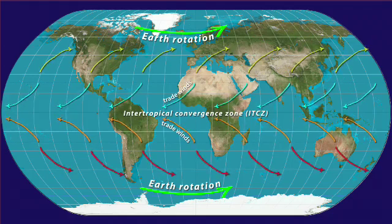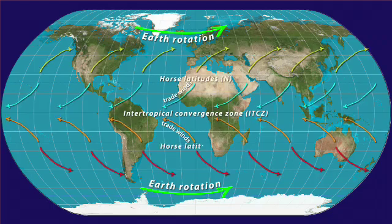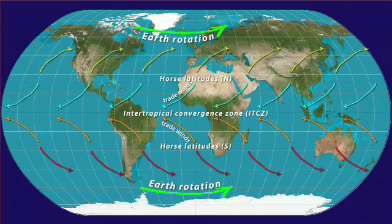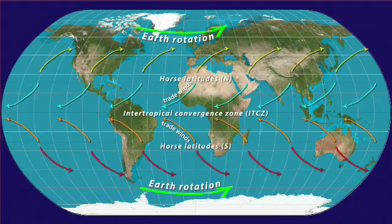The latitudes where the Hadley cells and Ferrell cells meet are known as the horse latitudes, and range from the subtropics to the temperate zones. Conditions here — recall — are high barometric pressure, low humidity, and low rainfall. This is why the arid zones are located along the horse latitudes.